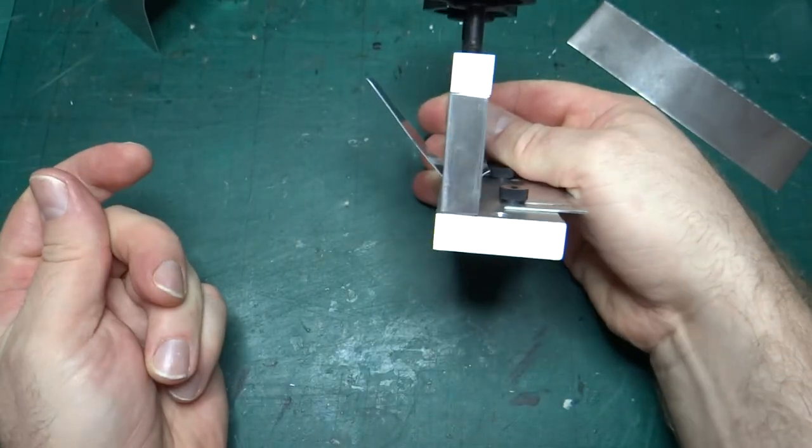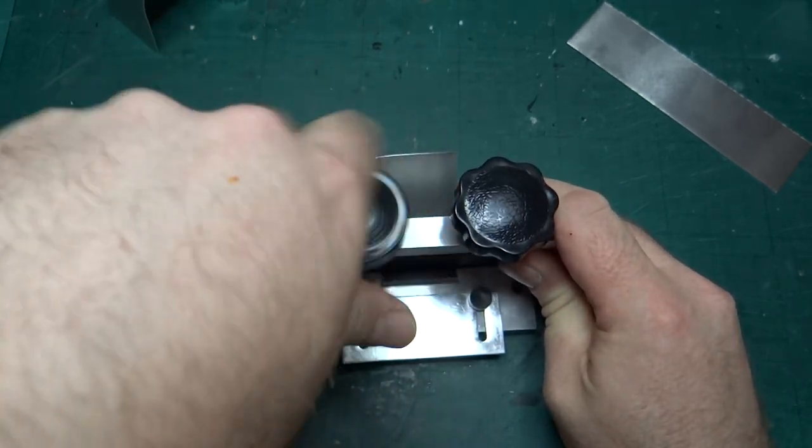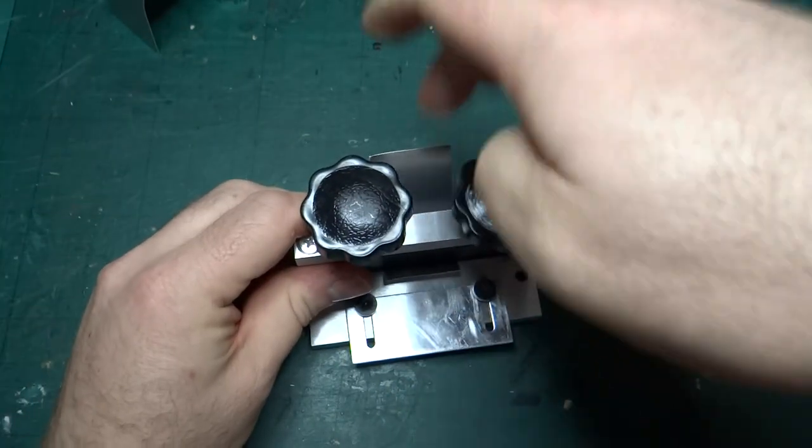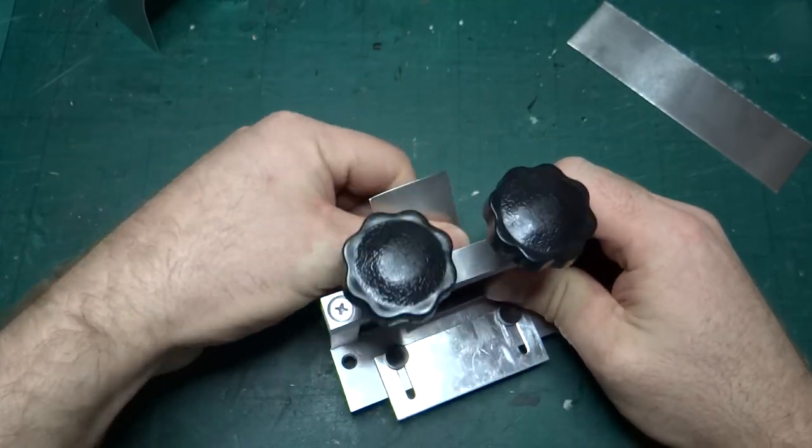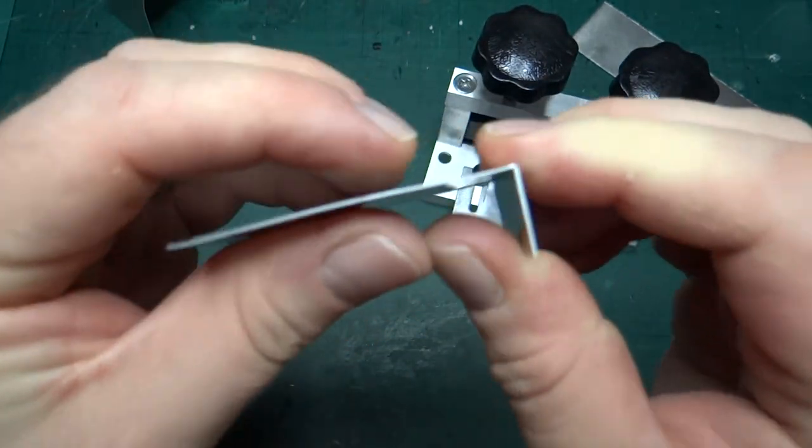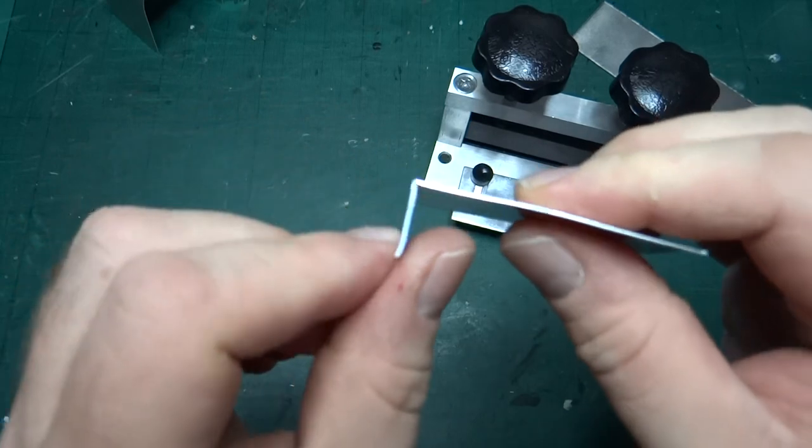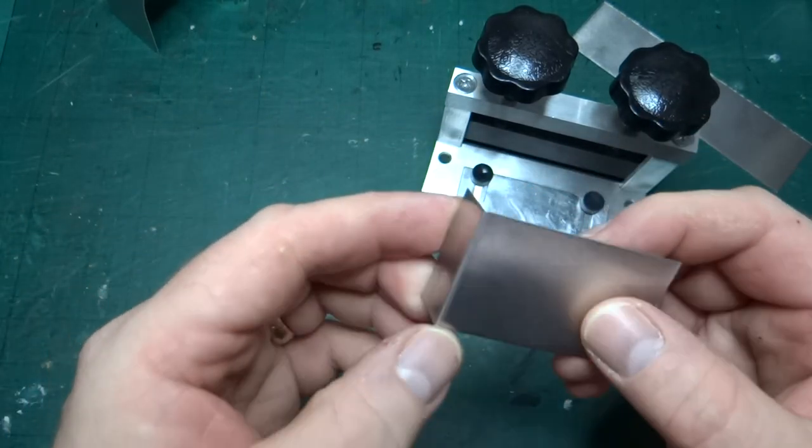So it's bent, it's bent nicely. So I can undo this, undo this, lift the guide up, it gets a bit stuck on the bottom. The radius on the bottom of this thing is quite sharp, so it does get stuck. But there you go, it's made a really nice tight bend, that's really, really nice.